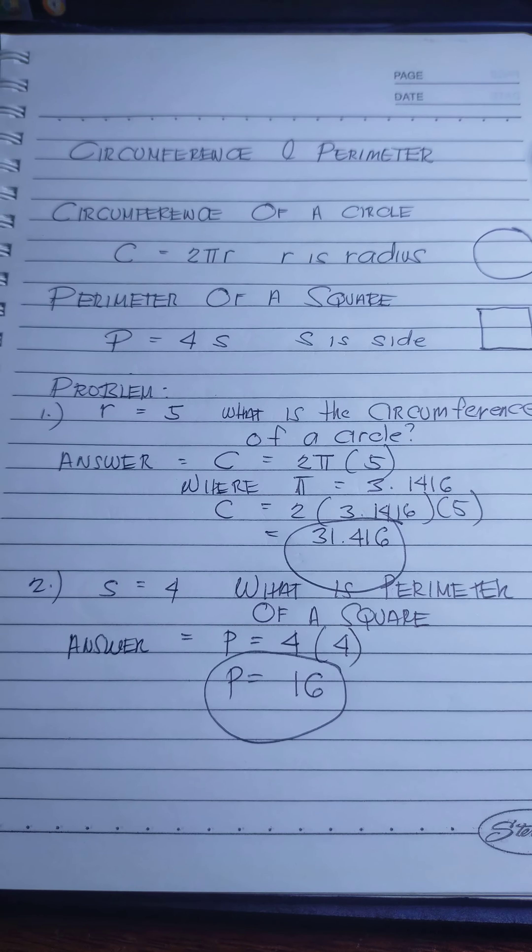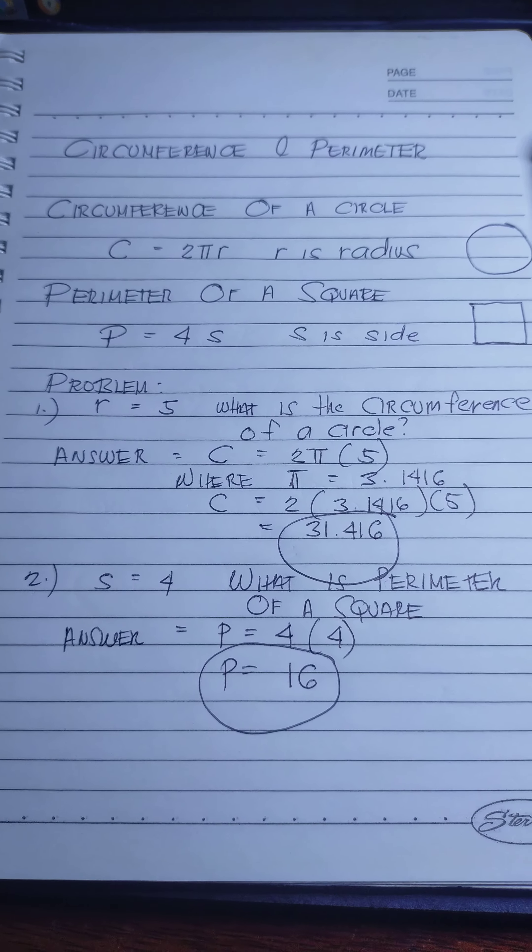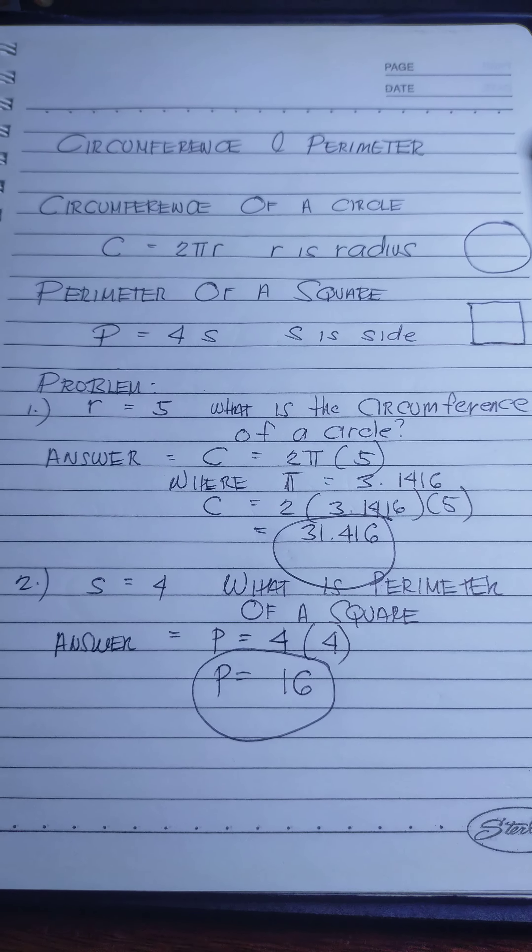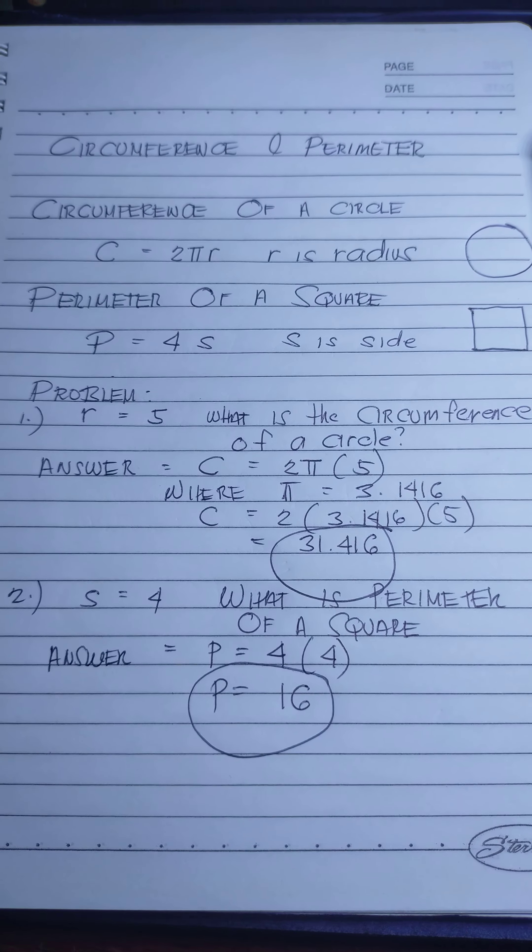Let's discuss circumference and perimeter. Circumference of a circle, the formula is 2πr, where r is the radius.